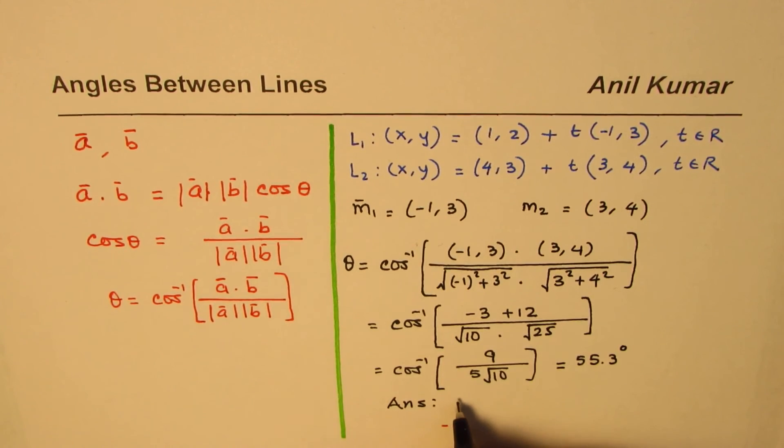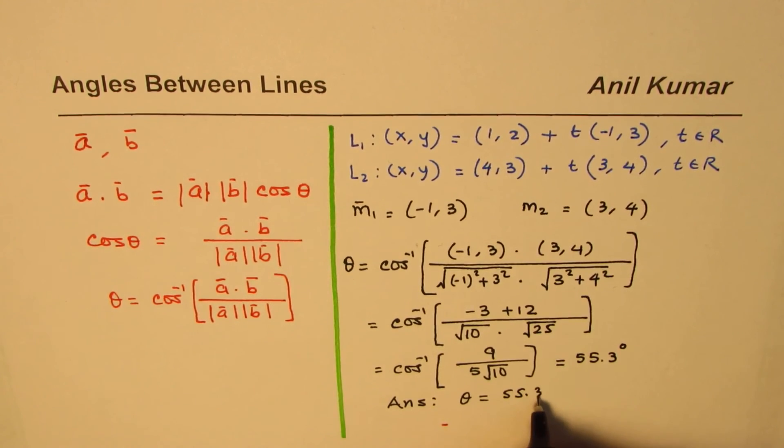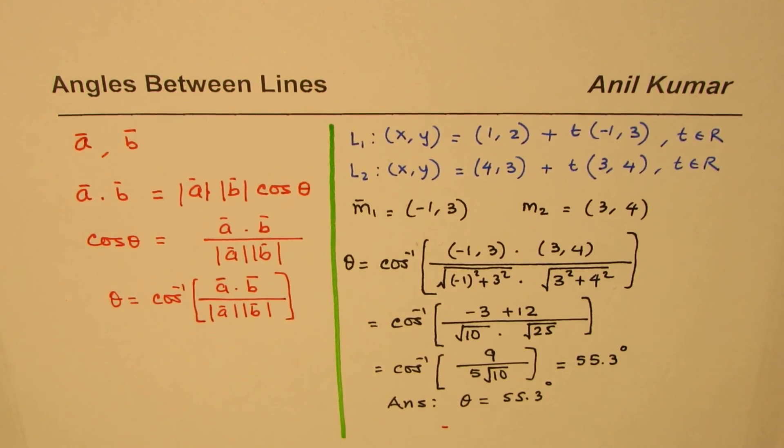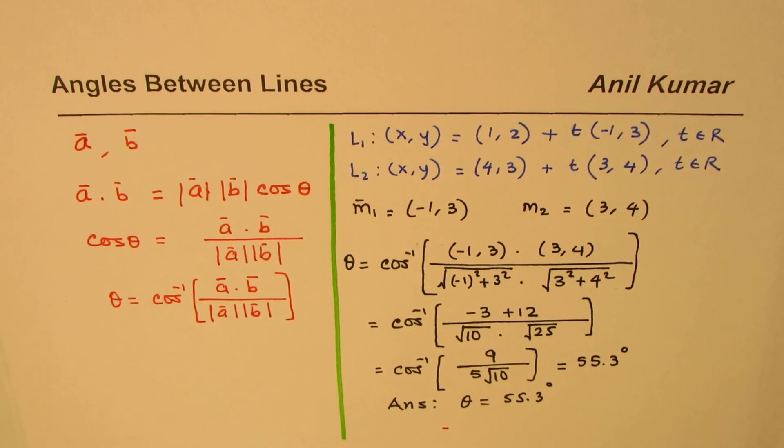We get our answer as theta equals 55.3 degrees. I hope the concept is clear to you and the steps involved. In another video we'll take up lines with different kinds of equations. I'm Anil Kumar and I hope that helps. You can always share and subscribe. Thank you and all the best.